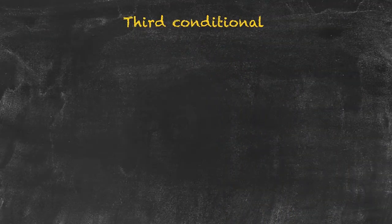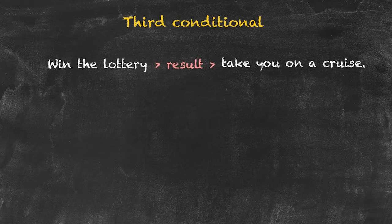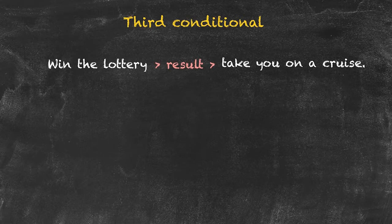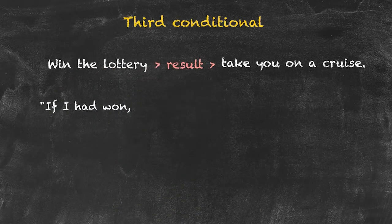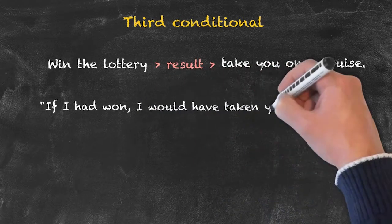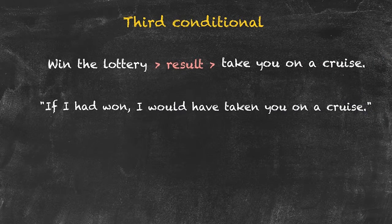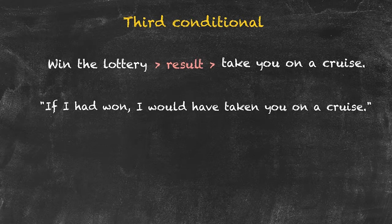We're now going to look at the third conditional. Consider the same situation as we've been using for the first and second conditionals, but putting it into the past. We're looking at the past result of an imaginary situation that occurred in the past. The sentence: 'if I had won, I would have taken you on a cruise.' It's a completely hypothetical, imaginary situation in the past that didn't occur — and this would have been the result if it had occurred.